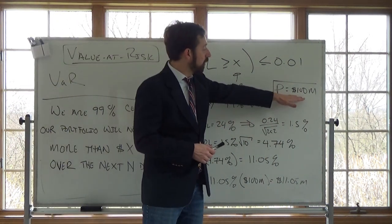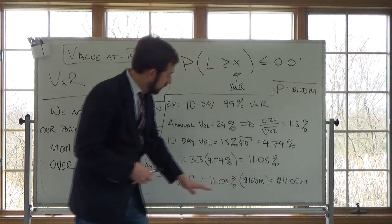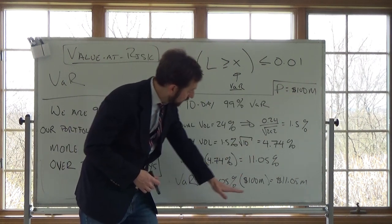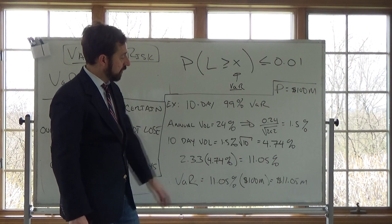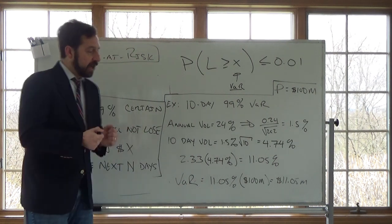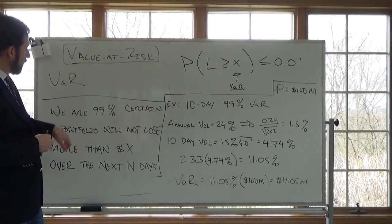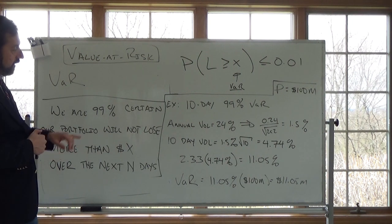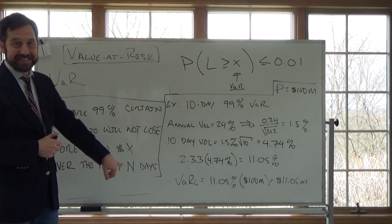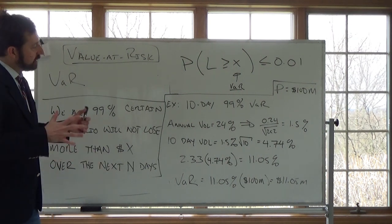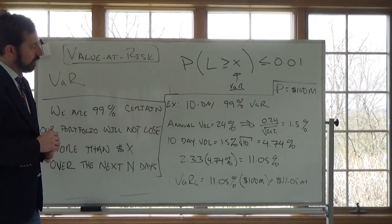And then assuming a portfolio value of 100 million, I can just take my 11%, multiply it by 100 million and say, I'm 99% certain that I will not lose more than 11.05 million over the next 10 days. So that's a very simple calculation of value at risk.